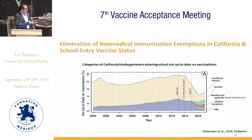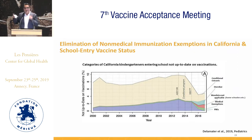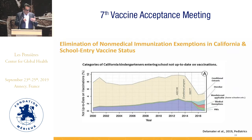After SB277, personal belief exemptions went down because they were no longer allowed. There was a substantial relative increase in medical exemptions — which was not surprising. There was also an increase in a new category where mandates were not applicable: homeschooled children or those in independent study programs, who still carry similar risks of disease transmission. That category exploded in a relative sense.